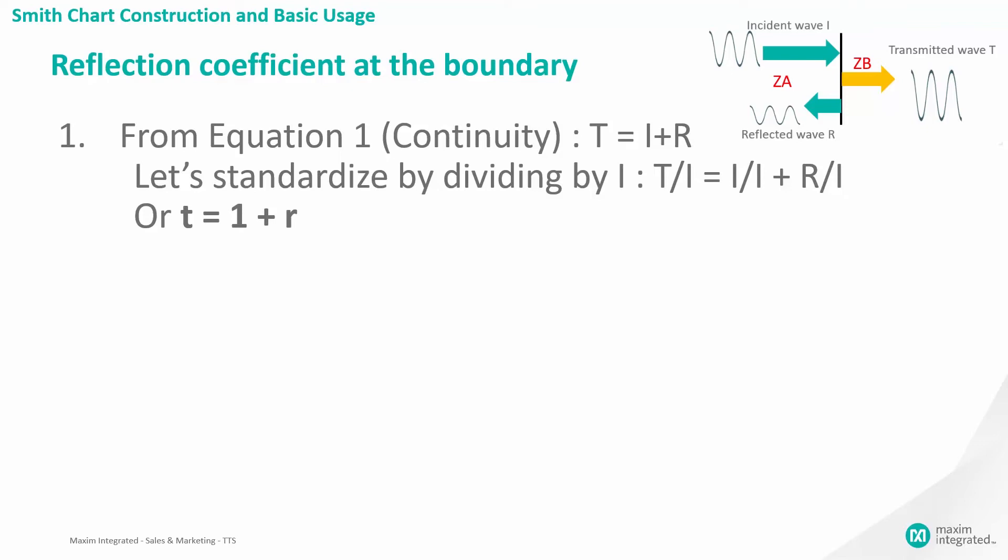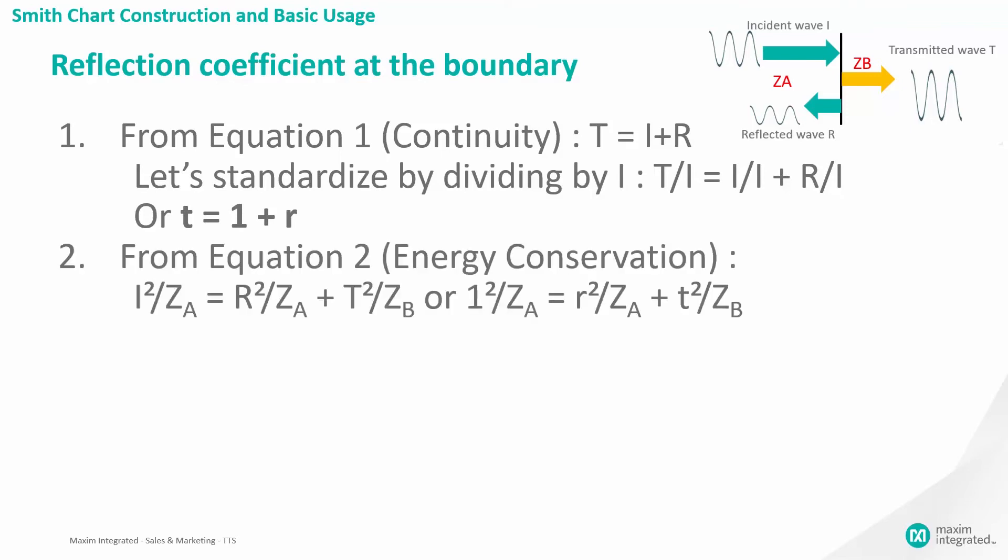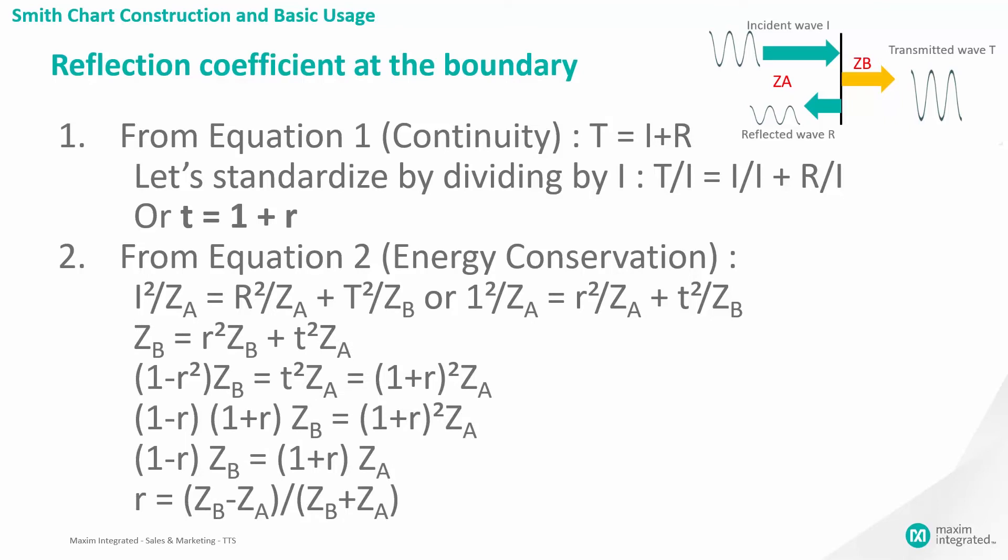Since also energy must be conserved at any point in a steady state system, we get the following equation, which we can also standardize. Using algebra, we can convert this equation to little r equals ZB minus ZA divided by ZB plus ZA.